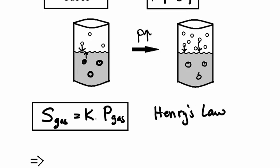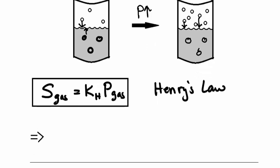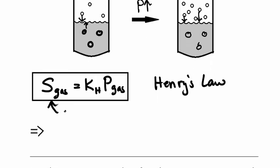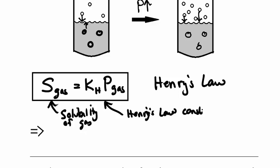And this constant we write as K sub H for the Henry's Law constant. So this is the solubility of the gas. K sub H is the Henry's Law constant. And that will be for a particular gas and solvent combo. And P is just the pressure of the gas above the solution.